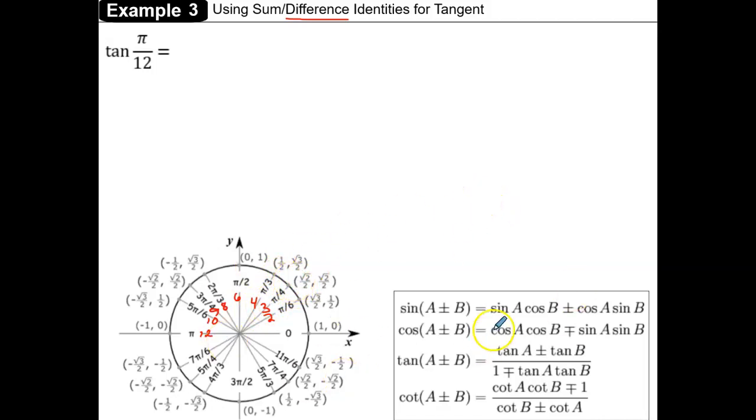Any of these are going to work fine. They're all going to simplify to the same value. Just to keep it simple, I'm going to go ahead and do the first two angles in the first quadrant, which would be changing tangent of pi over 12 into the tangent of 3 pi over 12 minus 2 pi over 12.